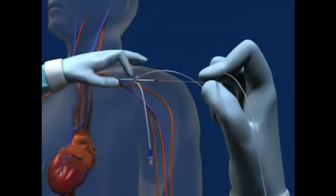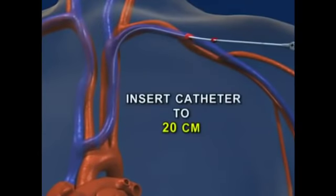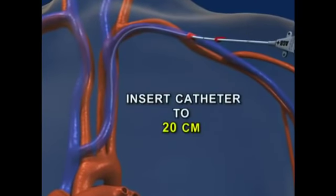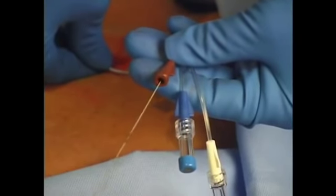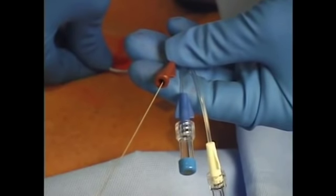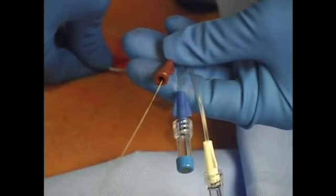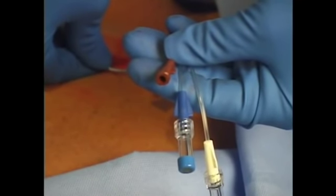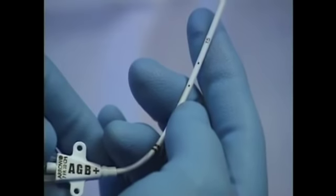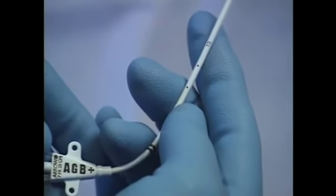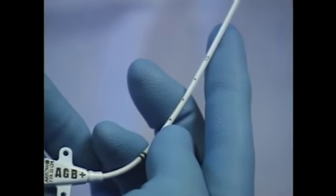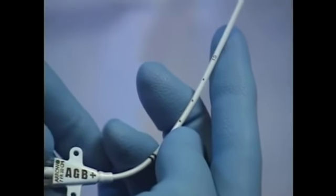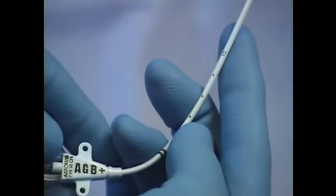Once the catheter has been inserted to 20 centimeters, the wire is removed. The catheter can then be positioned at the appropriate depth. The catheter has markings indicating the centimeters of the catheter distal to the insertion site.